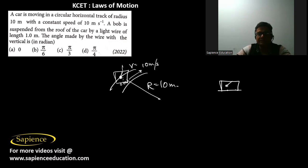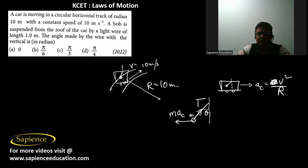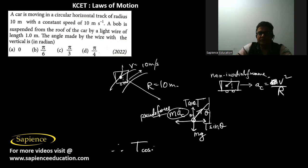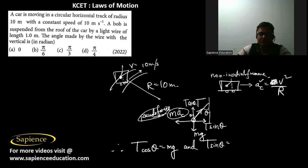The car is in an accelerating frame, so it has centripetal acceleration v²/r. A pseudo force acts on the bob. On the bob there is a tension force making angle θ with the vertical, pseudo force m·ac acting horizontally outward, and mg acting vertically downward. Since the bob is in equilibrium: T·cosθ = mg and T·sinθ = m·ac. This centripetal force is also called the centrifugal force acting on the bob.